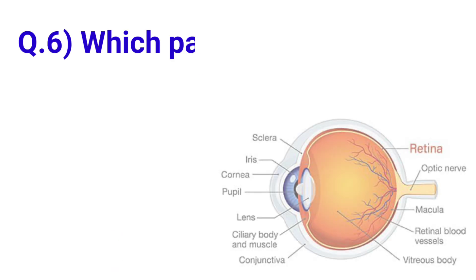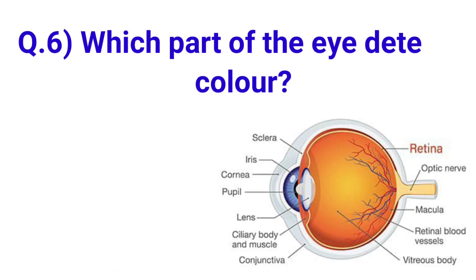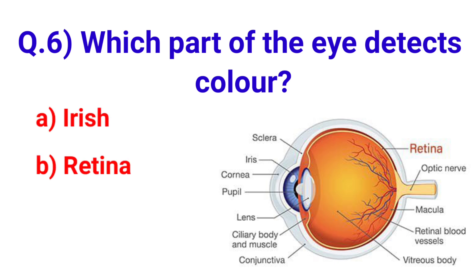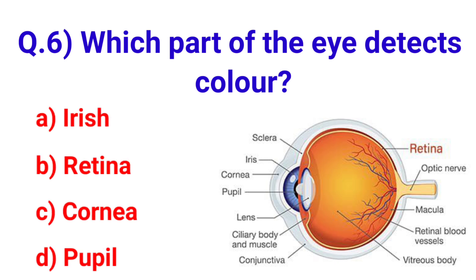Next question: Which part of the eye detects color? Your options are: A. Iris, B. Retina, C. Cornea, D. Pupil.